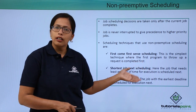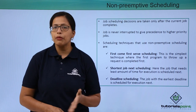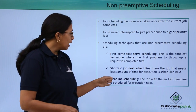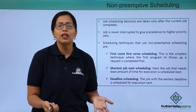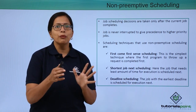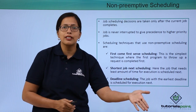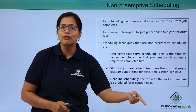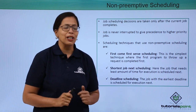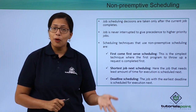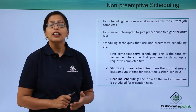Shortest job next scheduling means the job that will take the shortest amount of time is scheduled first. And last but not least, deadline scheduling — something we are all very used to in our lives. A job whose deadline is looming large gets done first. If a job has to be finished within the next hour, that will be done first because the deadline is today. If another job has to be done two days later, it is set aside until that deadline approaches. The operating system does the same — the job with the earliest deadline is scheduled for execution.